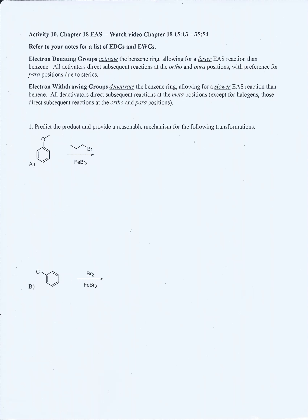This is Activity 10, Chapter 18 EAS. You need to know that electron donating groups are activating groups that attack on the ortho and para position, with preference of the para position when an activator is present. You also need to know that electron withdrawing groups are deactivators and direct next reactions onto the meta position, except for halogens whose directing is for the ortho-para position. For Part 1, A through C, you need to predict the final product and make a reasonable mechanism for each.